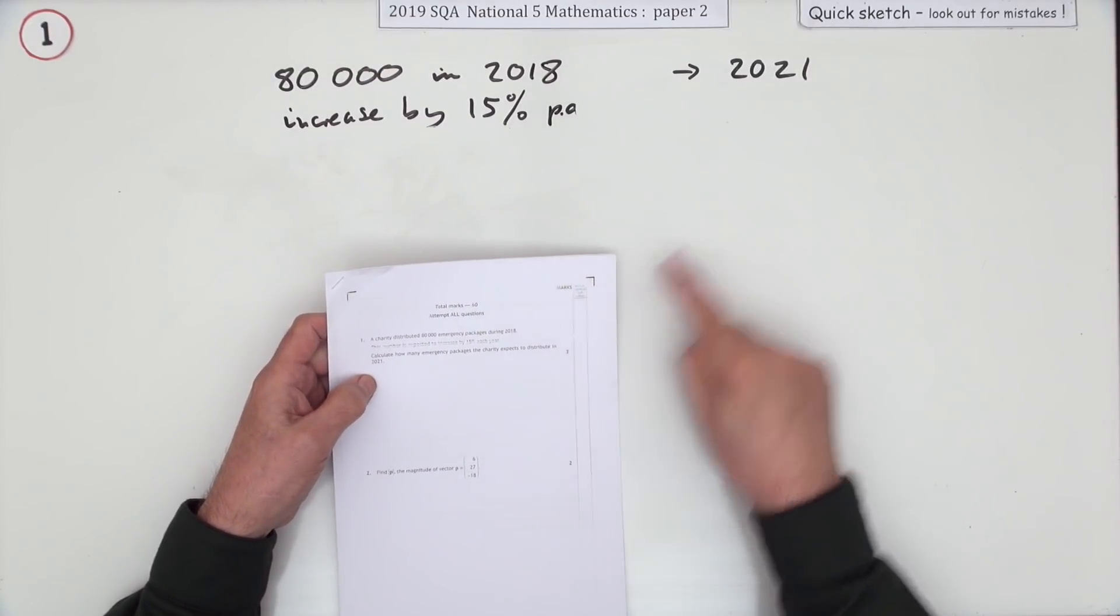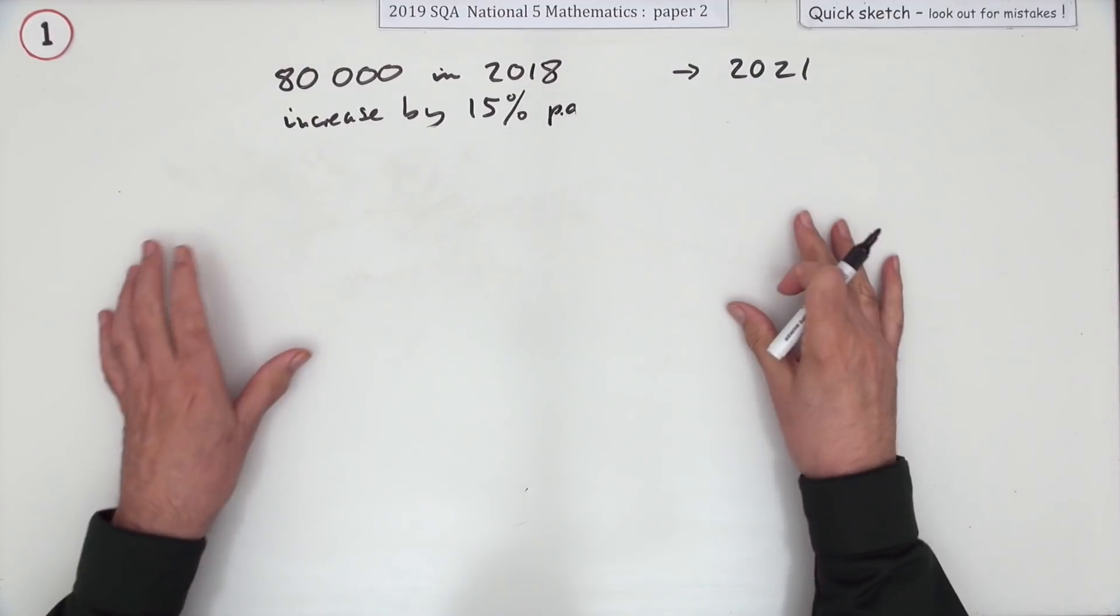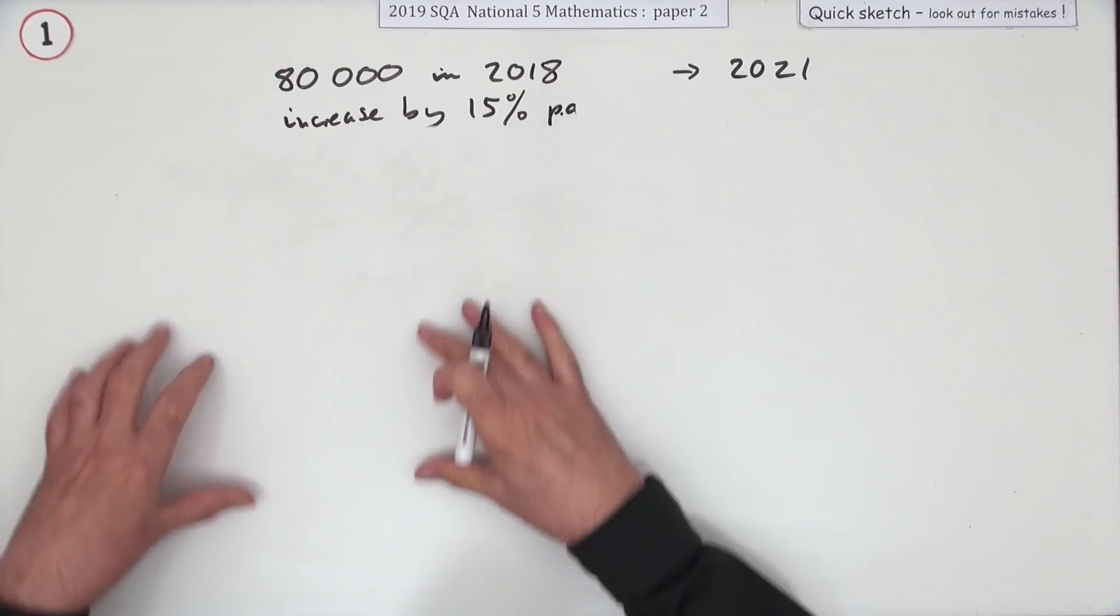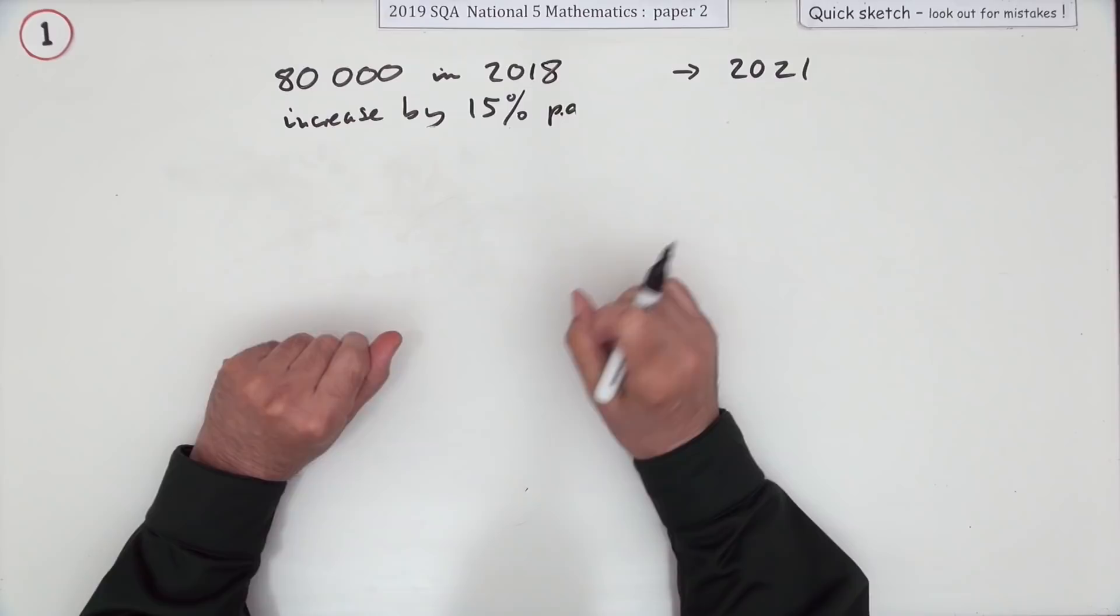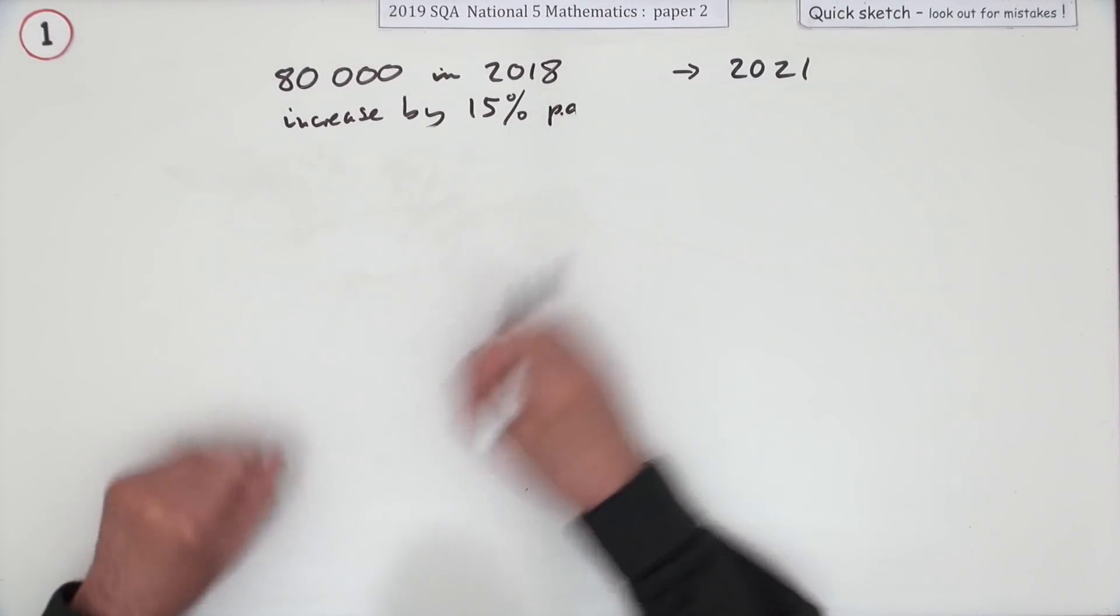Now I'm presuming nobody does this anymore in the multiple steps—that's the days before calculators really, where you would find 15% and then add it on, get a new amount, find 15%, and then just keep doing that.